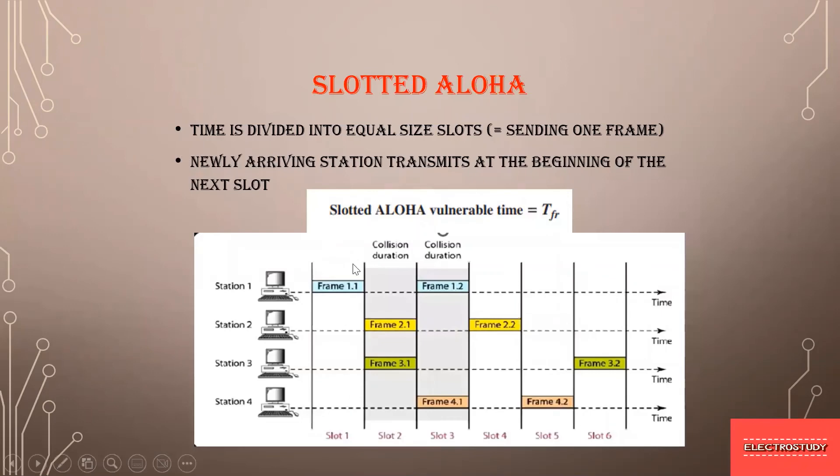Slotted aloha. Here you see before transmitting the frames, there are different slots framed in the transmission medium. Now in slot 1 there is only one frame. Slot 2 there are two frames, so these two will be collided. Slot 3 also these two will be collided. Slot 4 this will remain transmitting. Slot 5 this will remain transmitting. Slot 6 this will remain transmitting. One thing you can observe is from station 1 at least one frame is transmitting, station 2 one frame is transmitting, station 3 one frame is transmitting, station 4 one frame is transmitting.